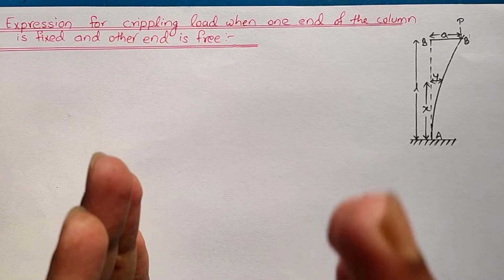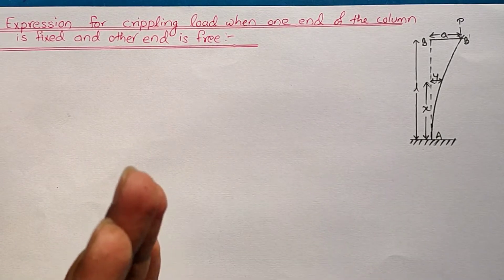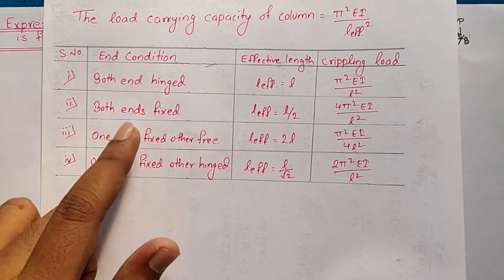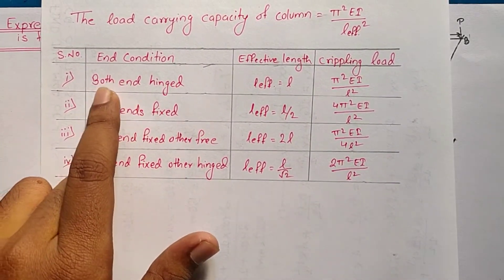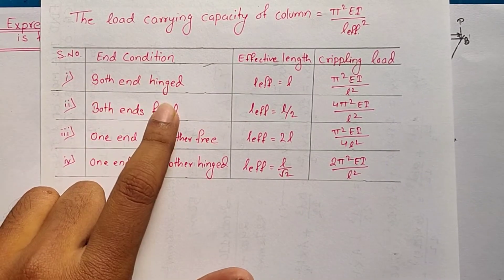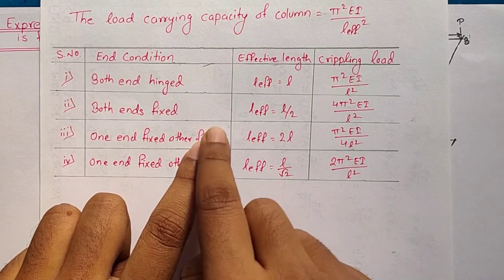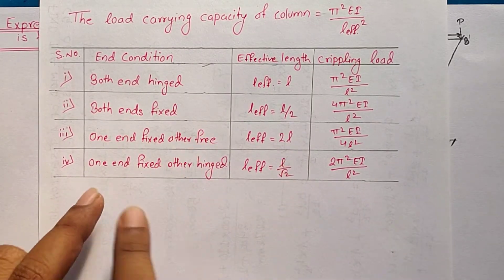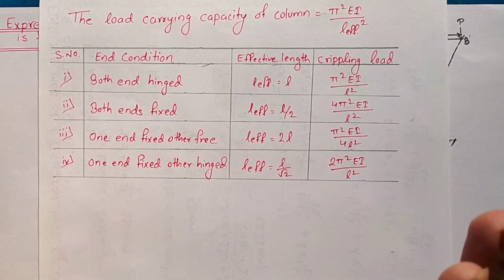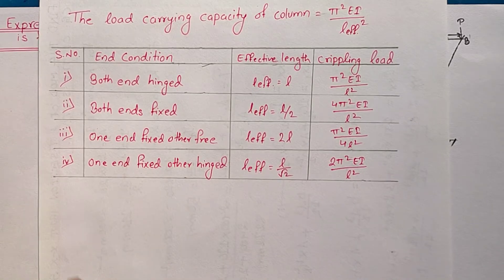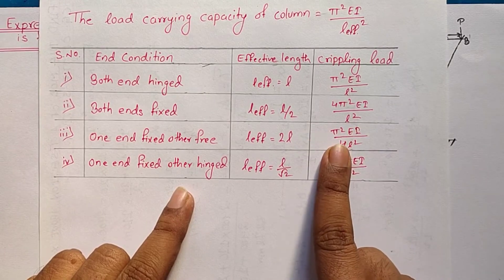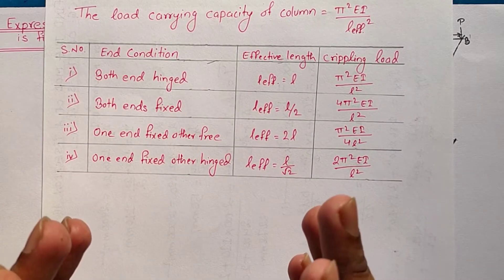There are basically 4 cases of loading or end conditions of the long column. The first is both ends hinged, second is both ends fixed, third is one end fixed and the other free — which is what we are discussing in this video — and the fourth is one end fixed and the other hinged. We will discuss all 4 cases in separate lectures. In this video I will be deriving the expression π²EI / 4L². So without further delay, let's get started.